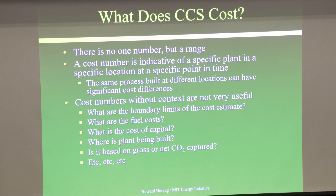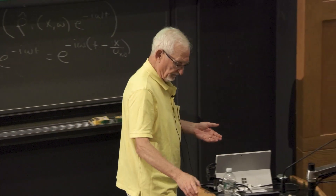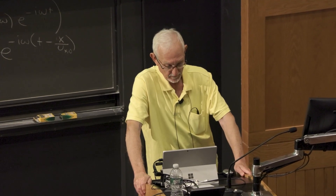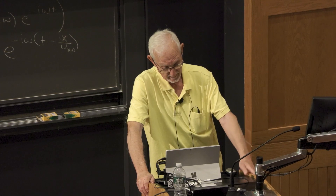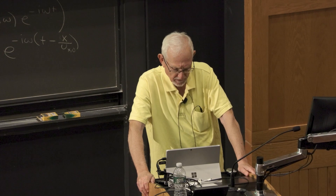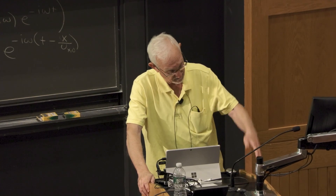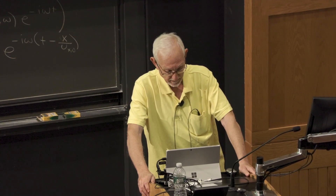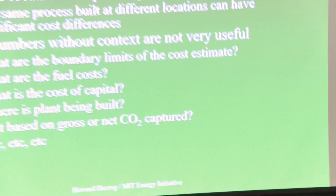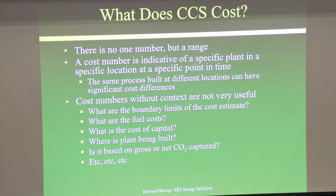What are the boundary limits of the cost estimate? If we go into the direct air capture literature, a lot of times they'll give cost without including the whole system — they don't include compression sometimes. What are the fuel costs you're paying? A big difference if you're doing something with natural gas in the US versus Europe versus Asia. What's the cost of capital? We've seen that change a lot — with inflation, the discount rate has gone up by the Federal Reserve. Where's the plant being built? Costs vary geographically quite a bit. Is it based on gross or net CO2 captured? So you always have to have context.